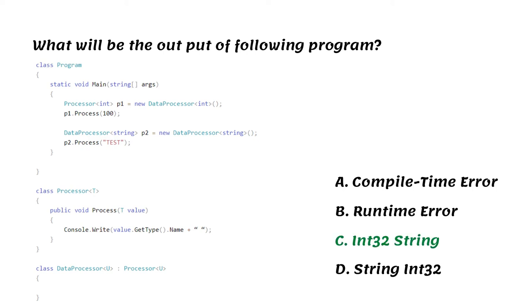It will display the type of the parameter value, and the value must be of the type specified at the time of instantiating objects p1 and p2.